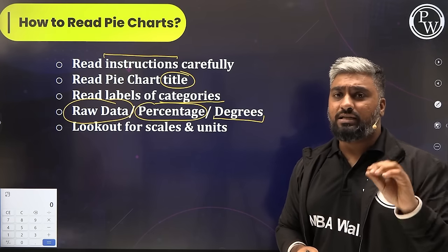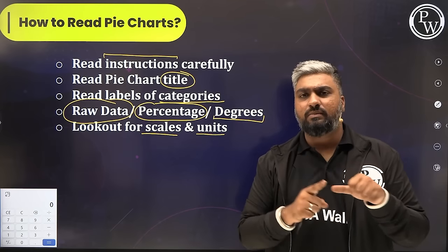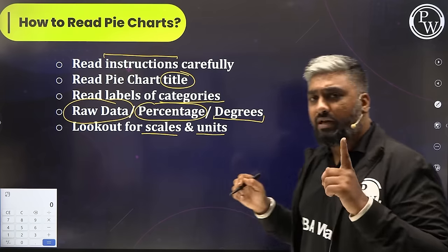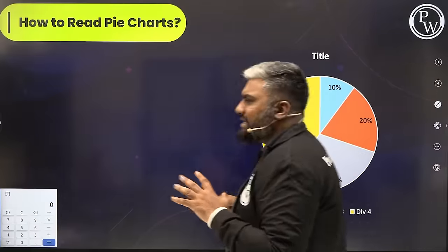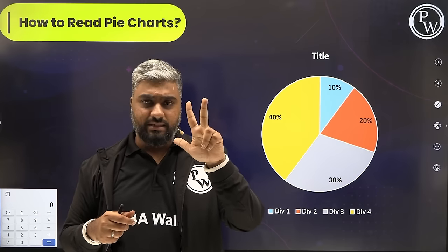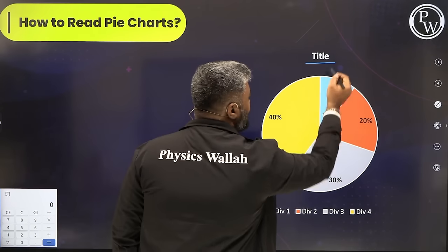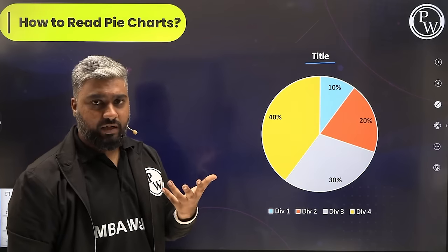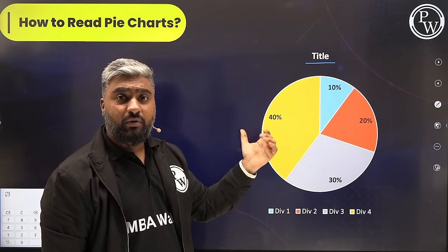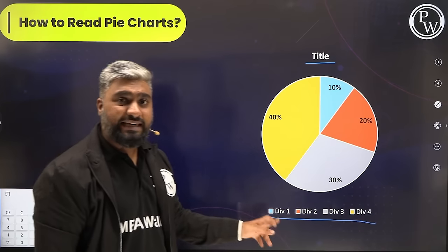The most important thing — this will blow up in your face, so please keep this in mind. Whenever there are scales and units given — if you have a scale in hundreds, thousands, or millions, or units in grams or kilograms — please watch out for them. The title tells you which year, which company, whether it's revenue, cost, profit, or number of people. Title padhna bahut zaroori hai, and along with the title, check your divisions and categories. You need to know which color represents what.